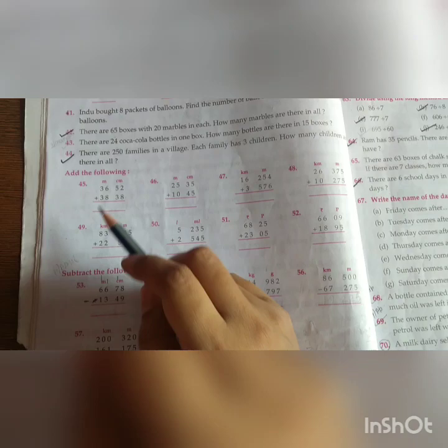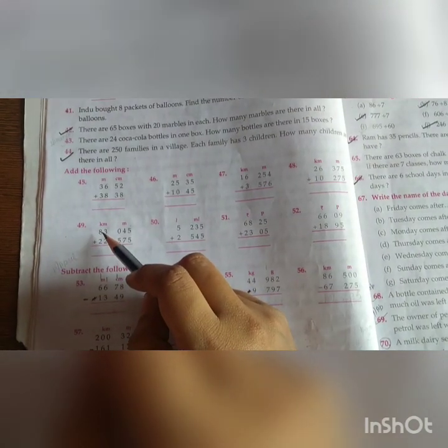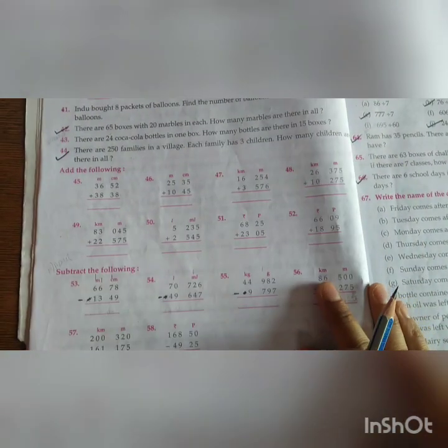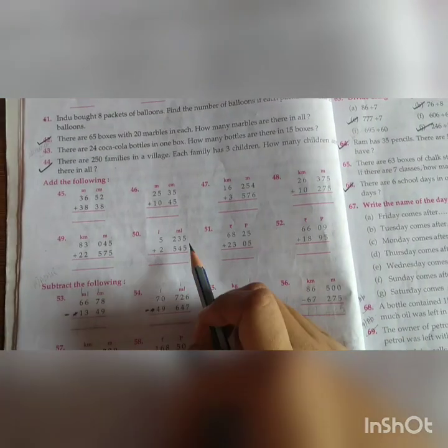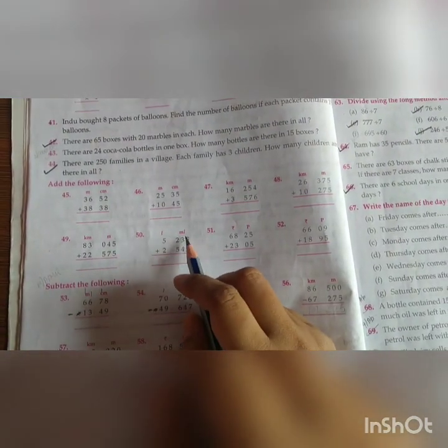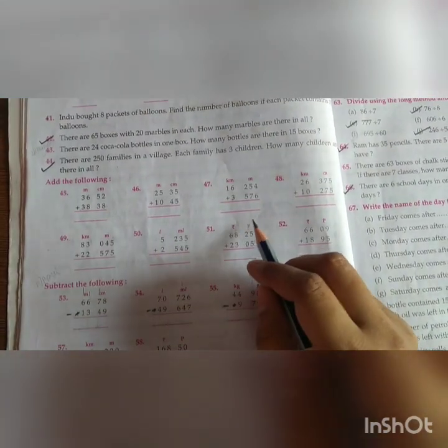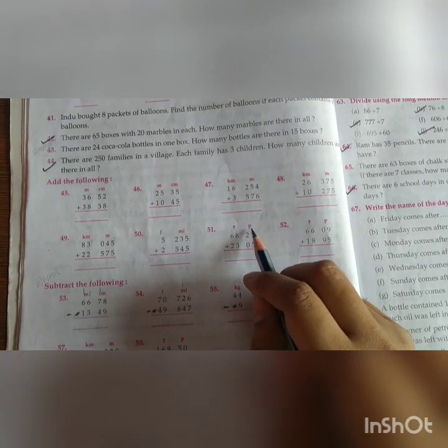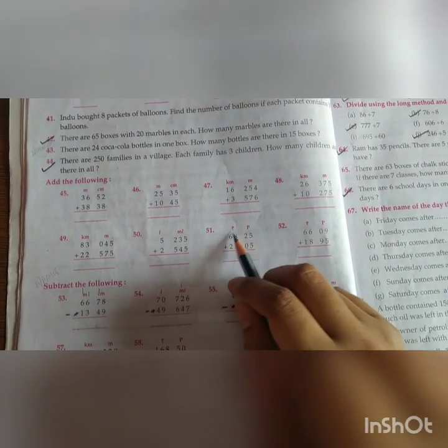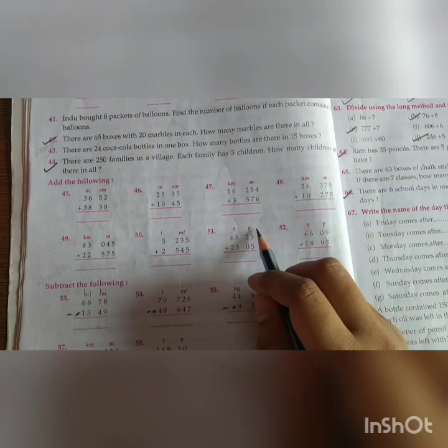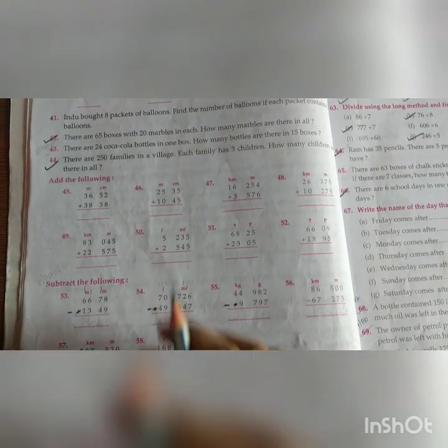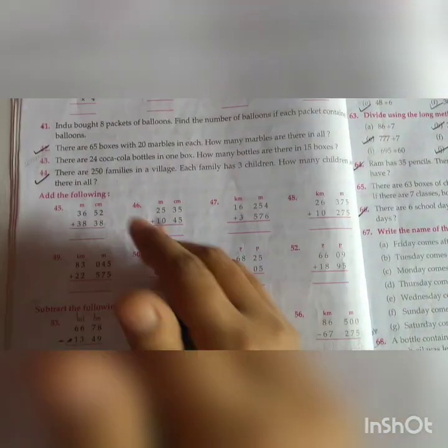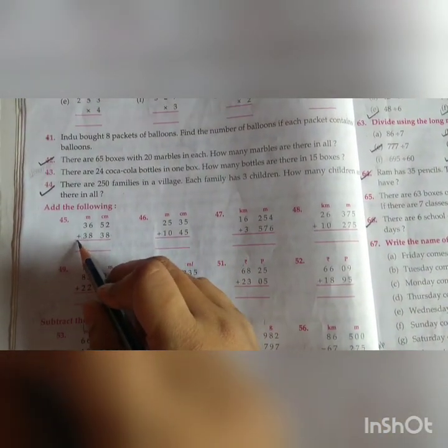Meter, centimeter, kilometer, they are unit of measurement of length. Liters and milliliters we use to measure capacity. We use to measure money. We use to find out the value of money. So it's just simple addition and subtraction only. Just two columns are made. See, we have to add this.